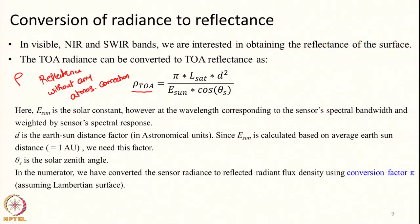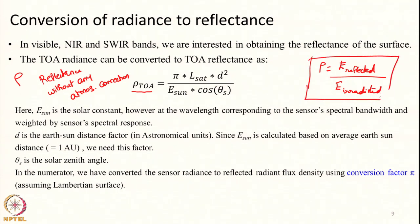Going back to basics: reflectance is defined as the radiant flux density that got reflected divided by the radiant flux density that irradiated the surface. That was the definition of reflectance we saw earlier. What is the irradiance that illuminated the surface goes in the denominator; what is the irradiance that left the surface after reflection goes in the numerator. Dividing them gives us the reflectance of the object. We are going to do the exact same step here — calculate the two terms, divide them to get the top of atmosphere reflectance.